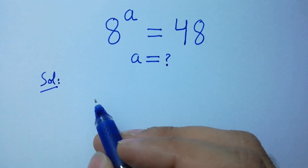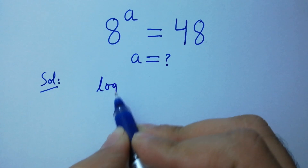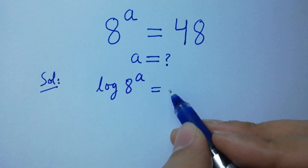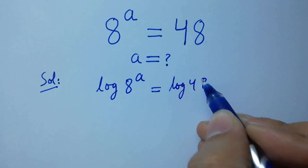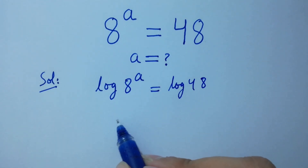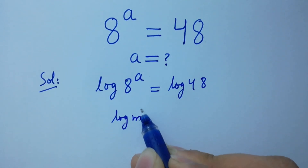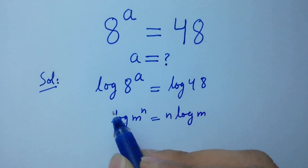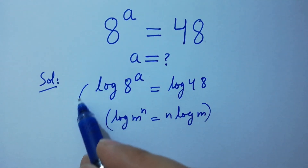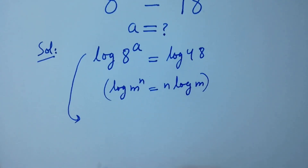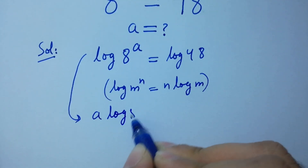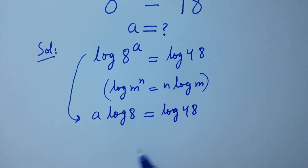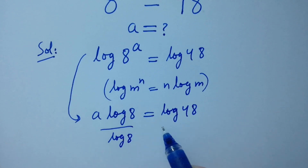Take log on both sides: log 8 to the power a equals log 48. As we know, log m to the power n equals n log m, it will be a log 8 equals log 48. Divide by log 8 on both sides.